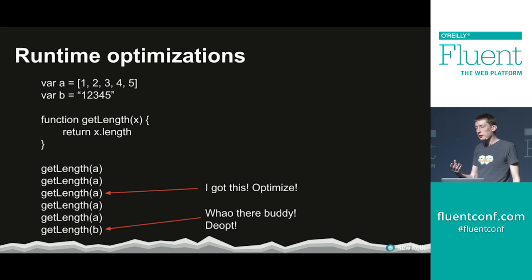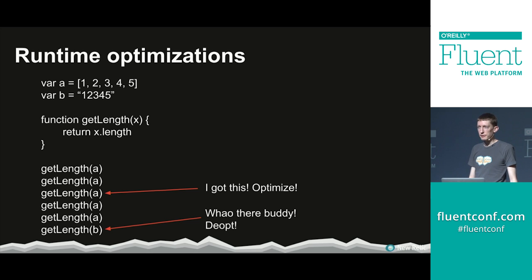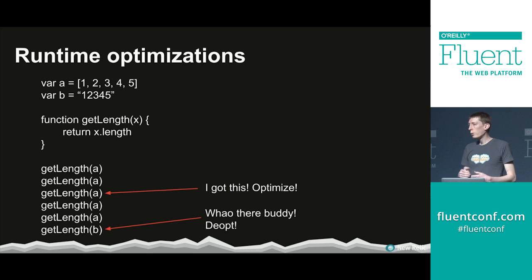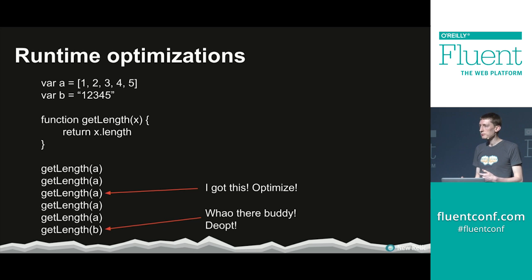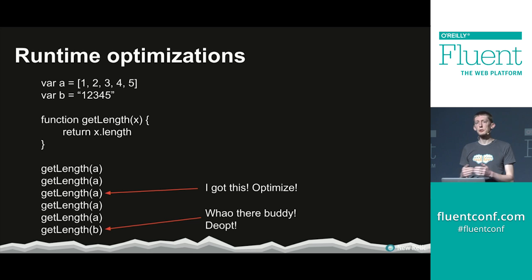Runtimes can be great at optimizing, especially when you pass the same object type into a function. If you have a million elements of the same type in an array and iterate through them calling the same function, you get a large optimization. But if you insert a different type halfway through the array, you'll hit a deopt and harm the optimizations going forward. Most engines will then notice you're always passing one of two types and re-optimize for both, but you've still harmed yourself a little.